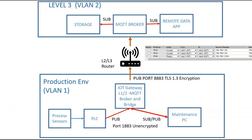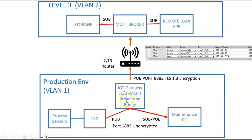MQTT bridges can also be used for load balancing and redundancy. Multiple brokers can be bridged to distribute client connections evenly or provide failover capabilities, ensuring high availability in a production environment. In a typical production environment — referencing our level one, two, and three architecture — PLCs publish and subscribe in an unencrypted format to an IoT gateway broker configured as a bridge, connecting the production environment to the level three environment through a router with configured access rules.